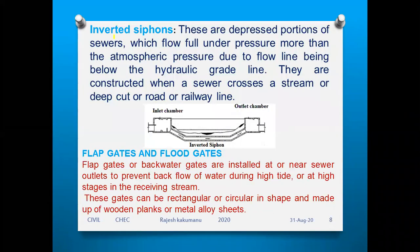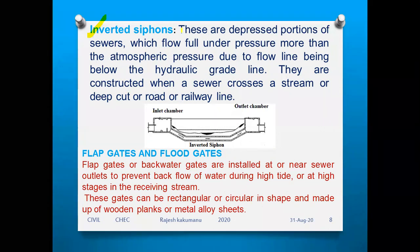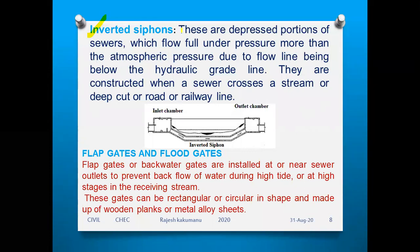The next accessory is the inverted siphon. These are depressed portions of sewers which flow full under pressure greater than atmospheric pressure, due to the flow line being below the hydraulic grade line.